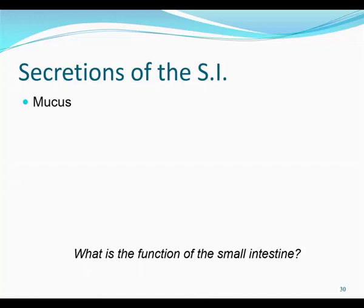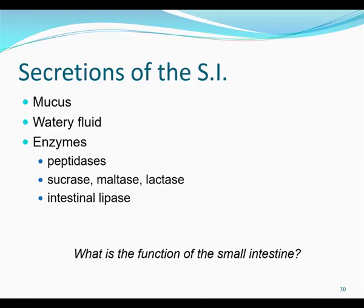The small intestine secretes a variety of things. Number one is mucus, which keeps everything slippery and moving. There's also lots of water, because as things get more moist, the enzymes work better. The small intestine also secretes many enzymes: peptidases to break down proteins to amino acids; sucrases, maltases, and lactases to break down disaccharides; and intestinal lipase to break down fats to fatty acids. If you're missing lactase, you are referred to as lactose intolerant. The lactose gets to the large intestine and the bugs there have a party, causing diarrhea, pain, and bloating. People who are lactose intolerant may take the enzyme lactaid to help break down lactose in their milk products.